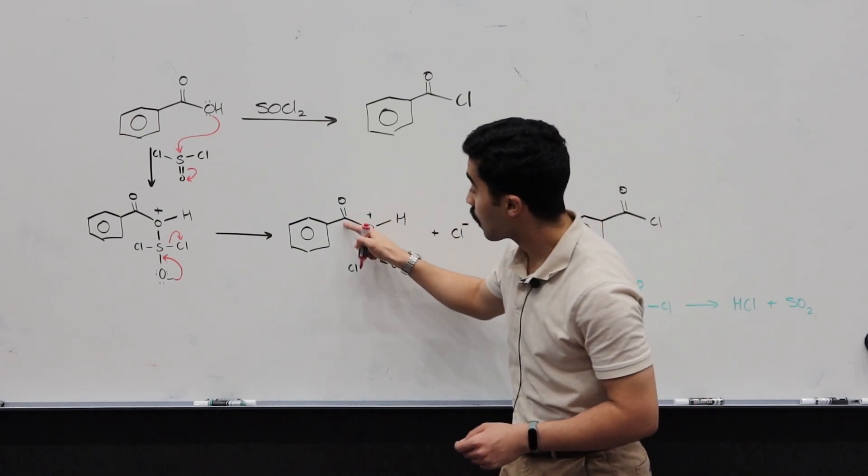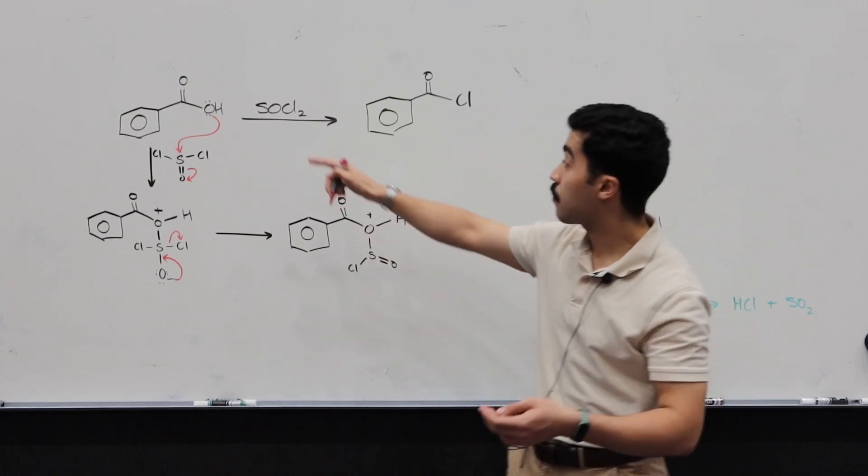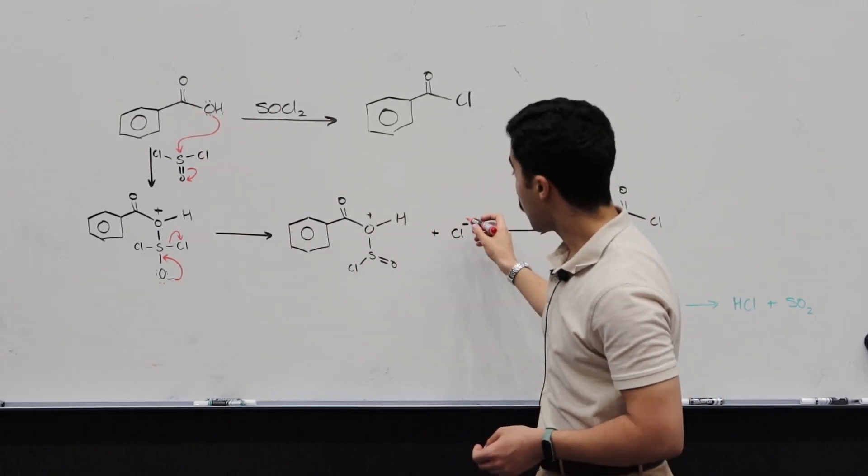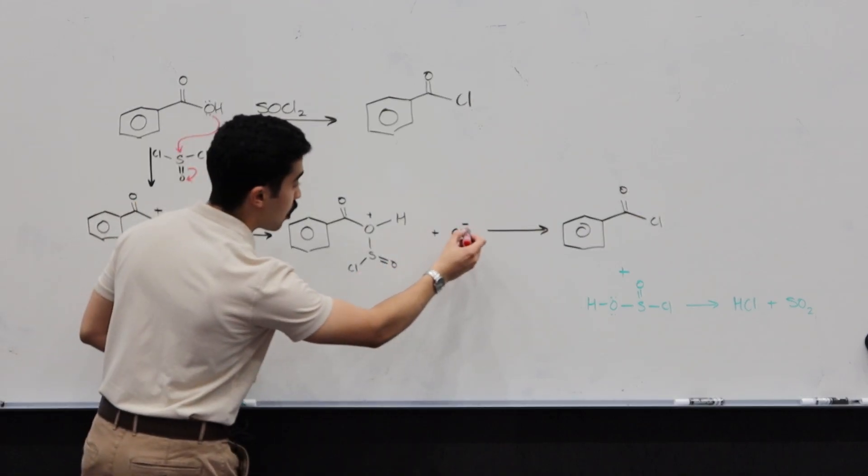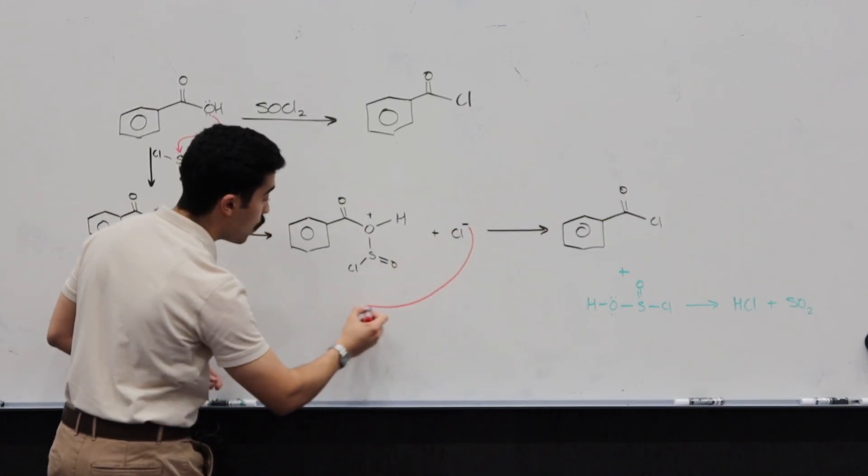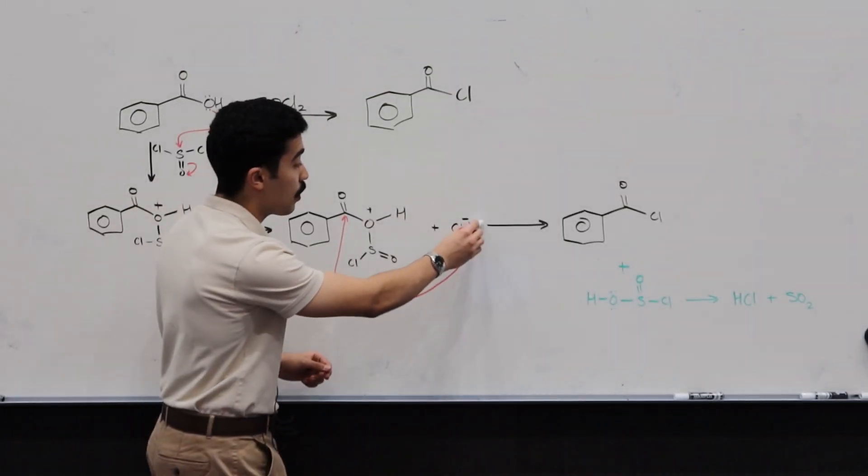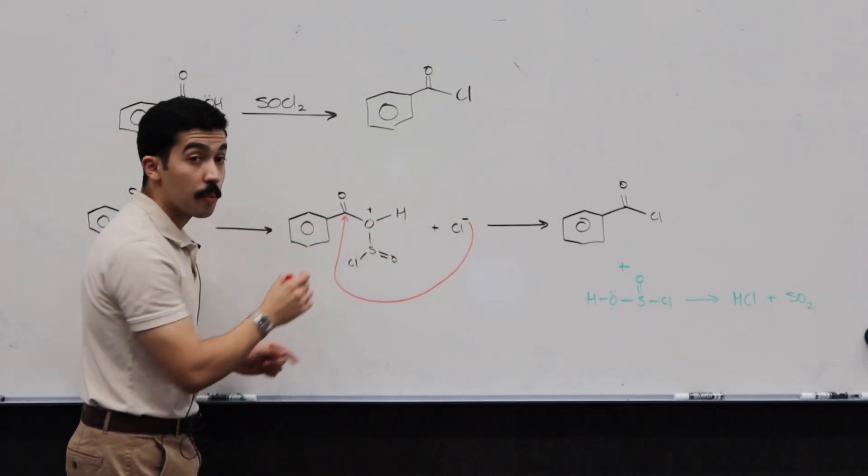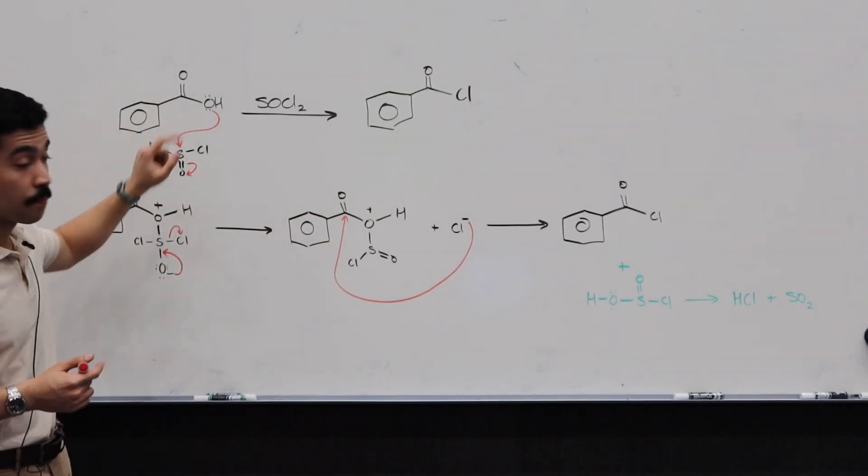This carbonyl right here that was originally part of the carboxylic acid. So we can add the arrow. I think it's better if I just move this way so you can actually see what's happening. Cl- is going to attack here. This chlorine atom will essentially now go in and attack this carbonyl, this electrophilic carbonyl that was originally part of our carboxylic acid.